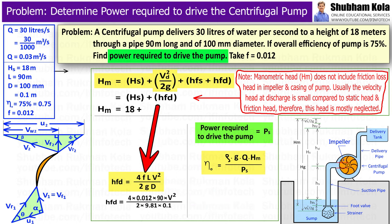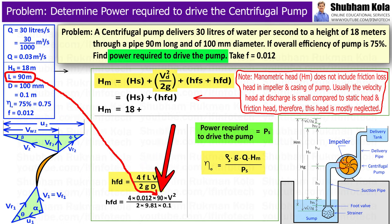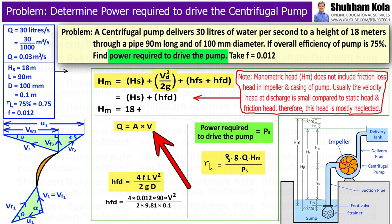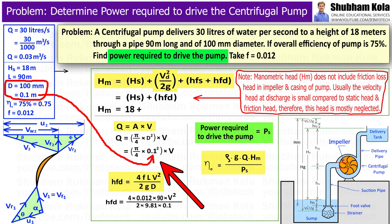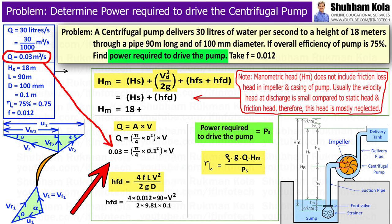Length of pipe L is 90 metre. Here capital V is velocity of flow, which we can calculate by discharge rate, because discharge rate is the multiplication of velocity of flow V into area of flow A. And area of flow we can calculate from π/4 D². And capital D is given as 0.1 metre, and discharge Q is given as 0.03.